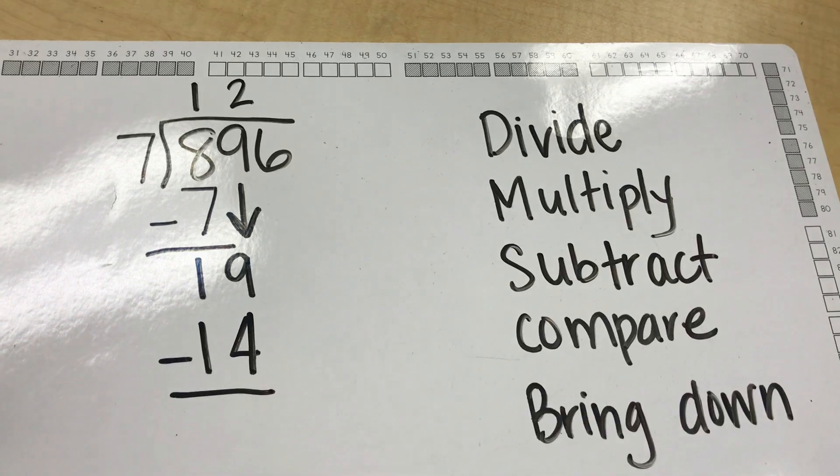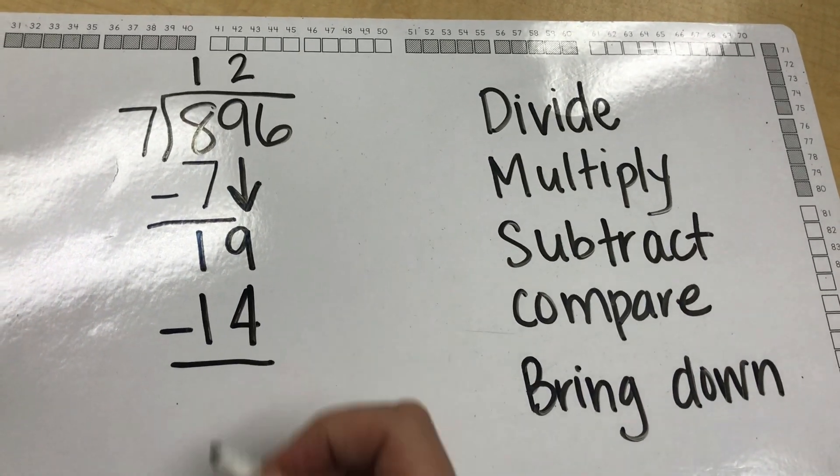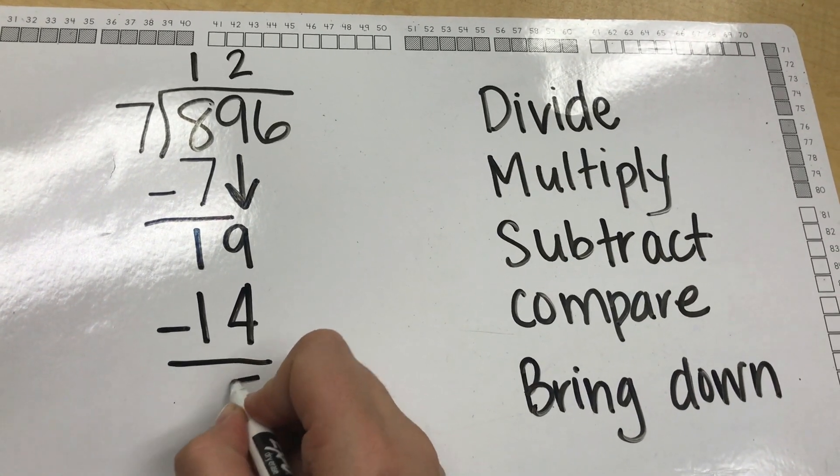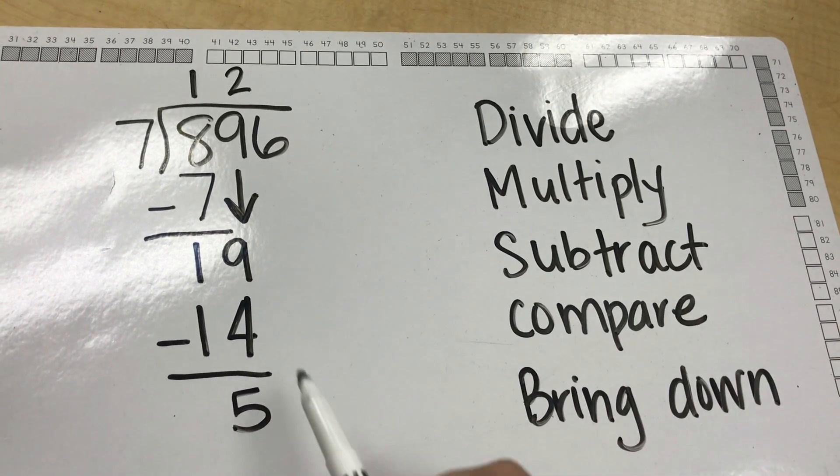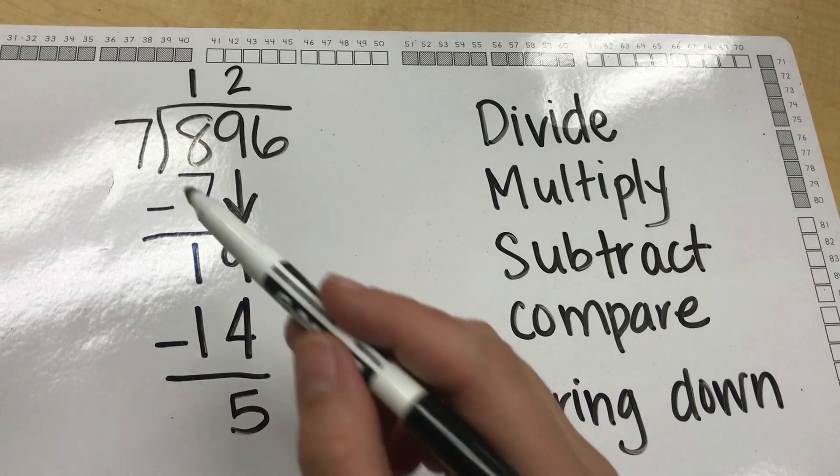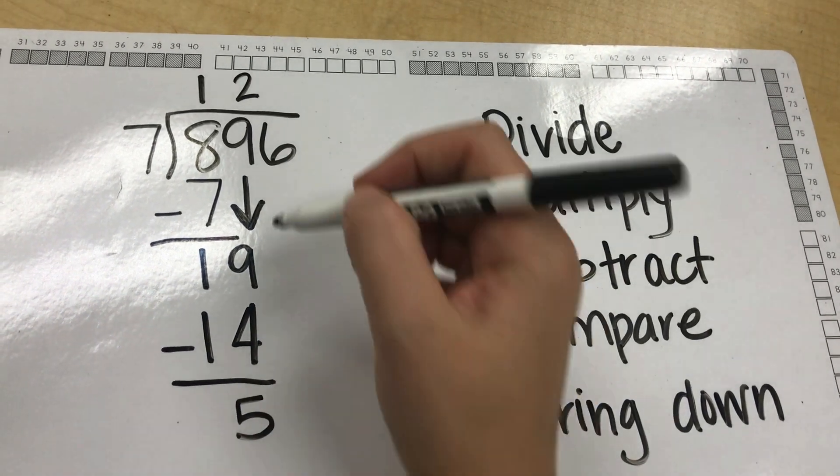Then I move on to step 3 which is to subtract. When I subtract 14 from 19 I am left over with 5. When I compare my answer with my divisor, 5 is smaller than 7 and I know I have done my math correctly.